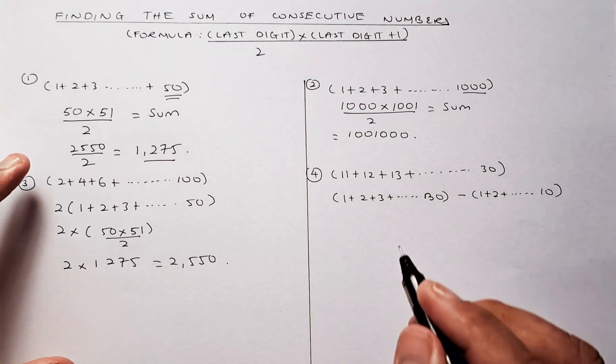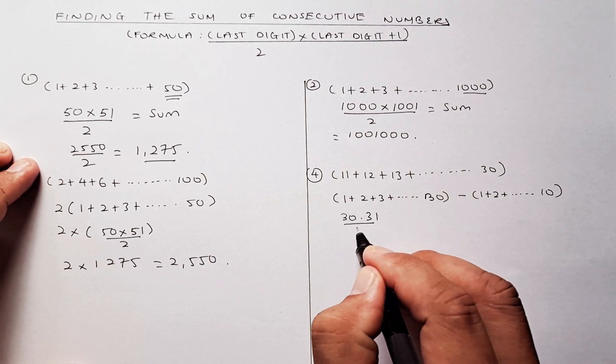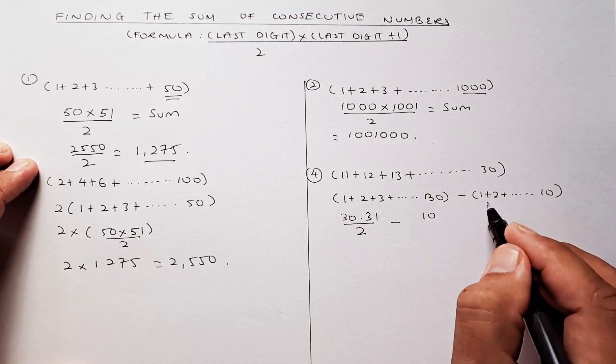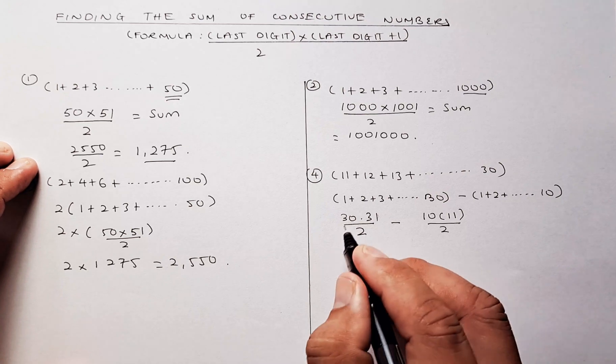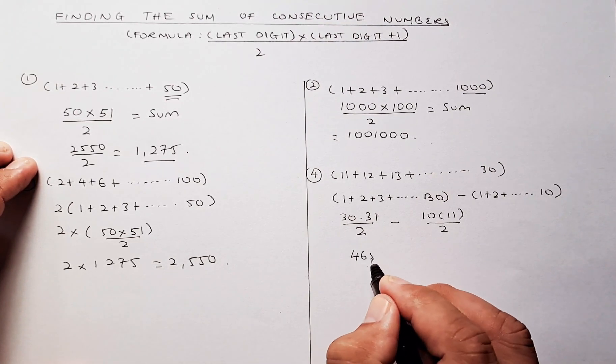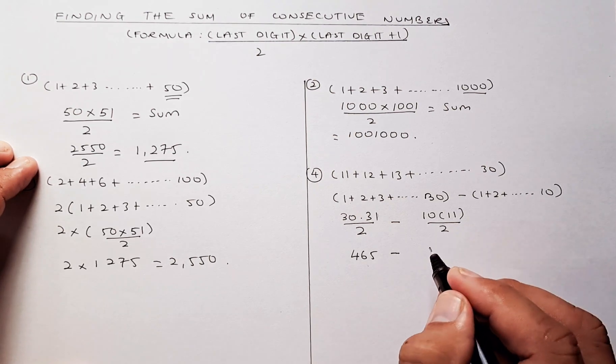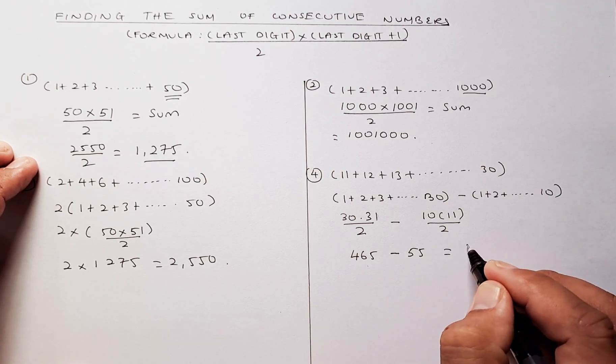So now we're going to calculate 1 to 30. So you're going to be 30 times 31 divided by 2 and then you're going to minus 10. It goes 1 to 10, 10 by 11 divided by 2. So you use the calculator, 30 times 31 divided by 2 is going to be 465. And you minus 10 times 11 divided by 2 is going to be 55. And the answer is going to be 410.